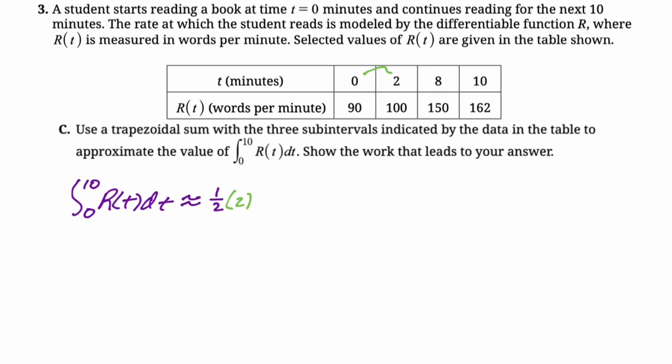So one half the height, sum of the bases. So the sum of the bases can be 90 plus 100. And then in the formula, we have another one half. Then we're going from 2 to 8. So that's 6. And then the sum of the bases will be 100 plus 150.